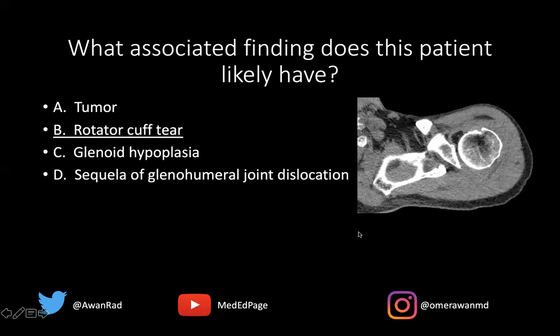So the best answer here is a rotator cuff tear. This finding of a bursal lipohematoma is associated with a rotator cuff tear — more specifically a full thickness rotator cuff tear. It has nothing to do with a tumor. There's no evidence of glenoid hypoplasia; the glenoid looks pretty well formed. And this certainly doesn't look like glenohumeral joint dislocation — I don't see a Hill-Sachs defect or a Bankart lesion along the anterior inferior glenoid.